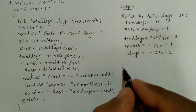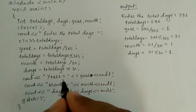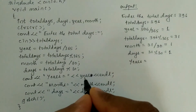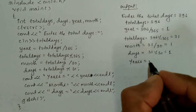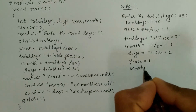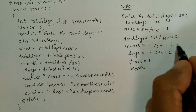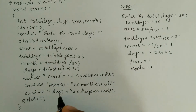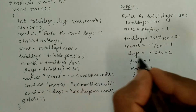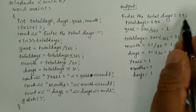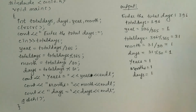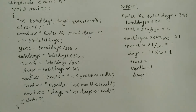Now printing the output: years is equal to 1, months is equal to 1, days is equal to 1. So 396 days means one year, one month, and one day.